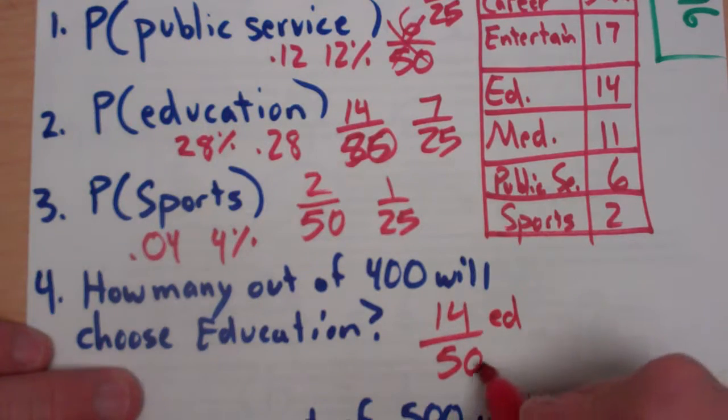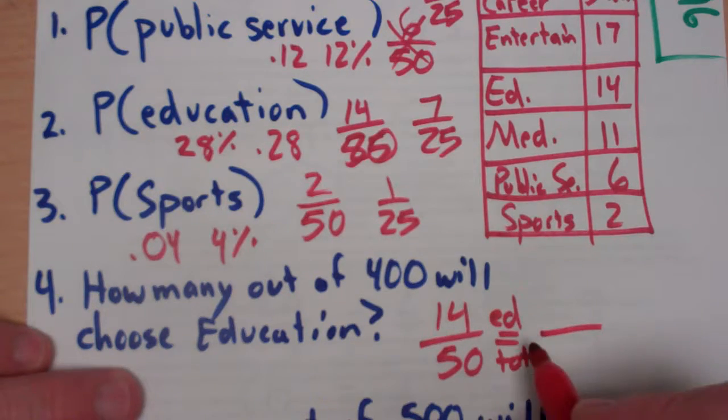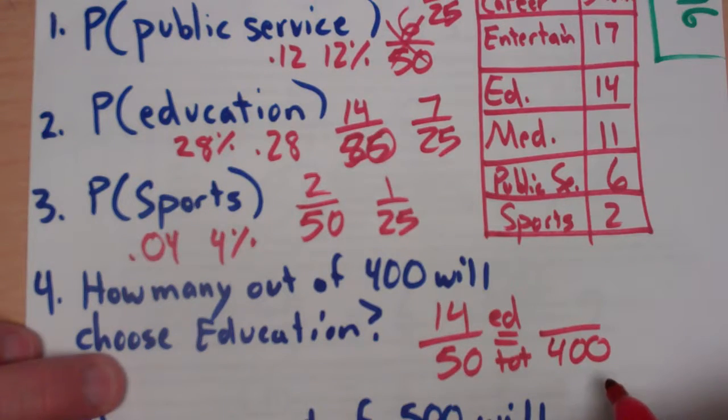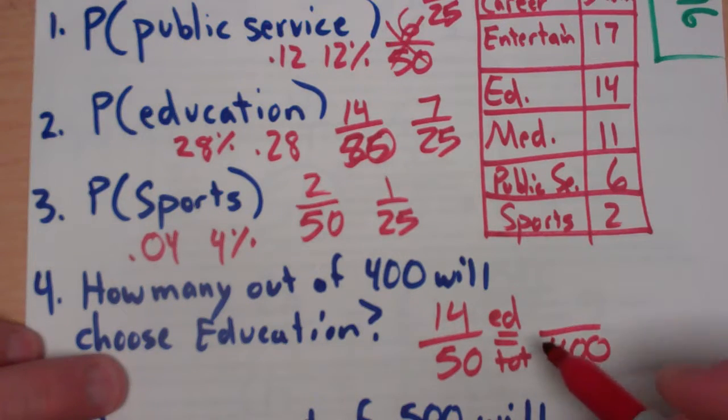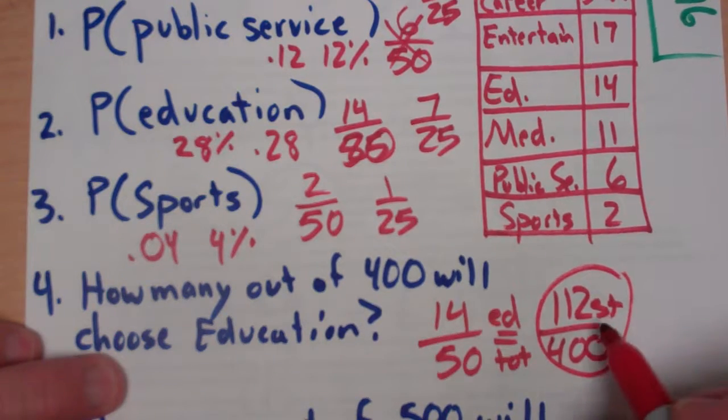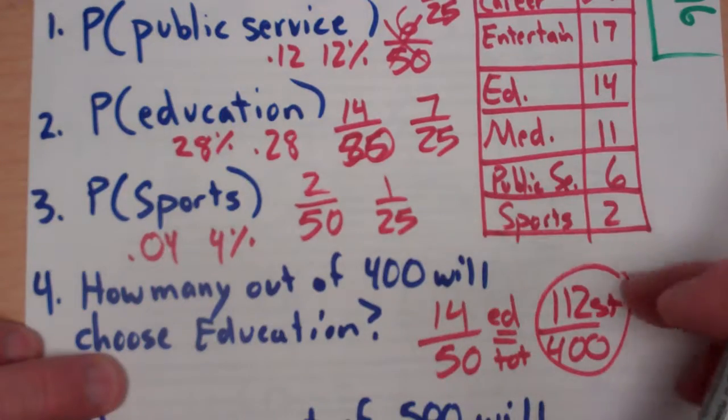I'm going to go ahead and label it, out of total. So, there were 14 education out of 50 total. But we want to grow this out to a population of 400 total. So, we're ready to multiply and divide. When you multiply and divide, you're going to find out that there are about 112 students in the entire population of 400 if it's at this same probability.